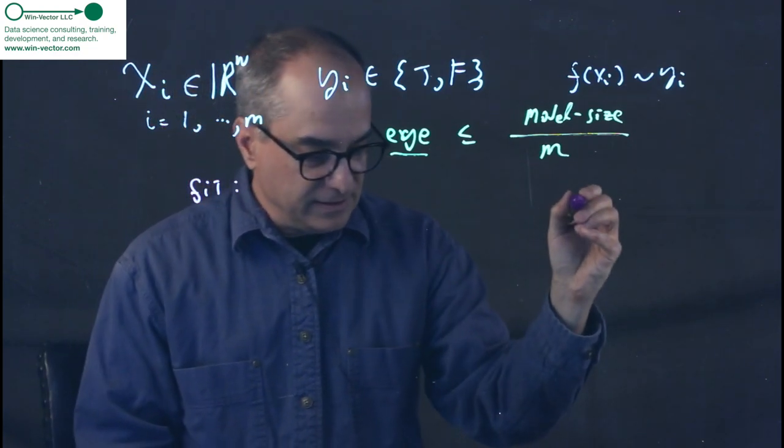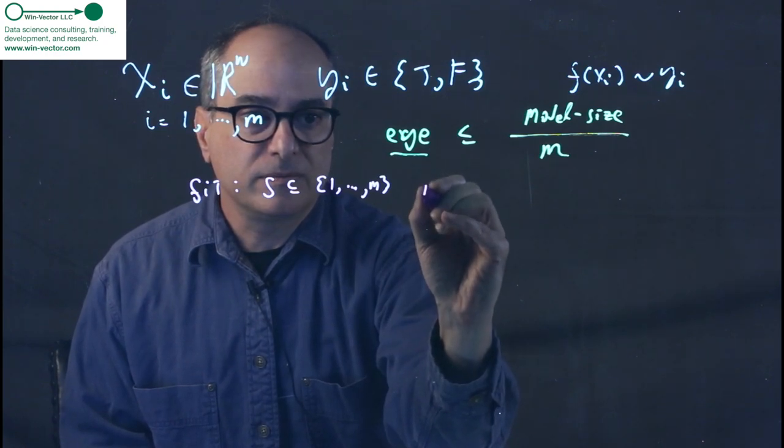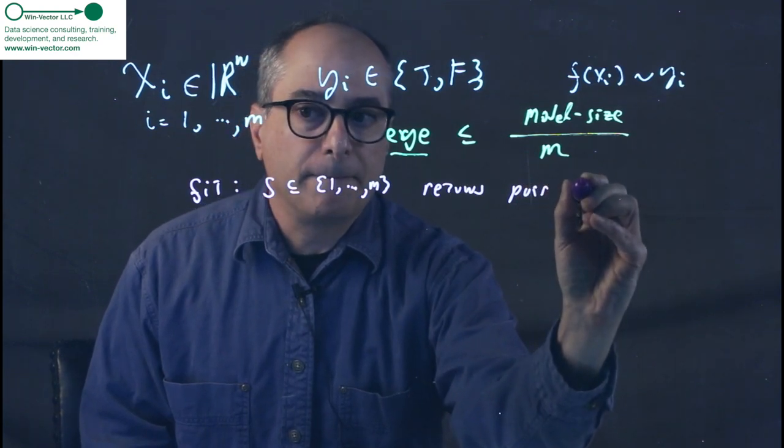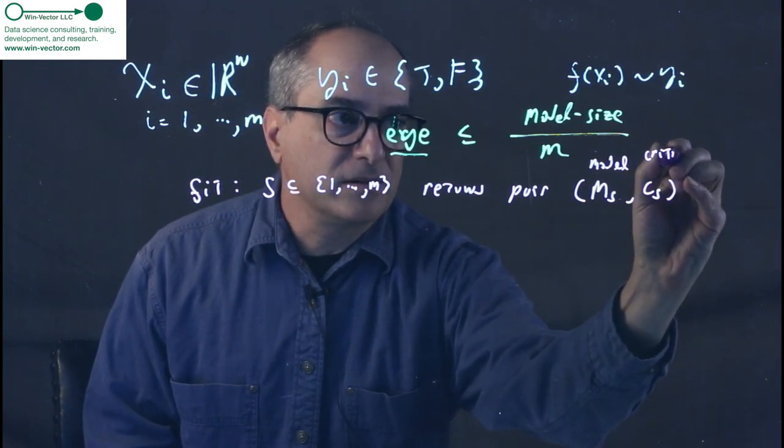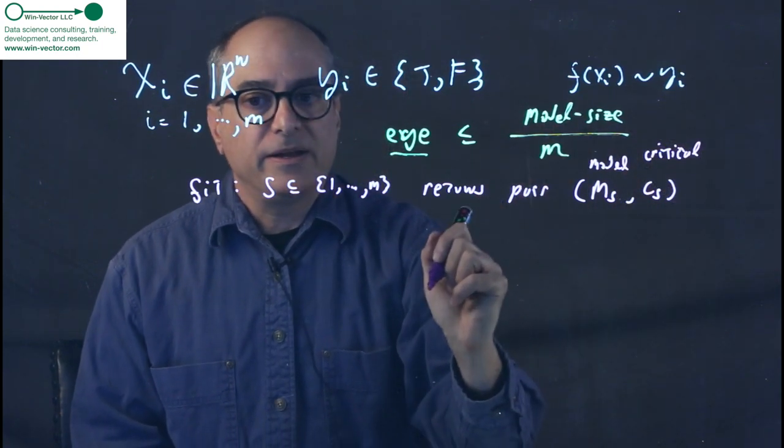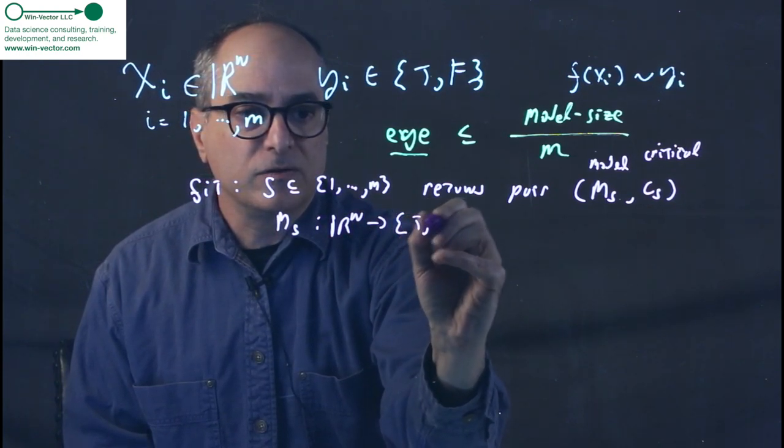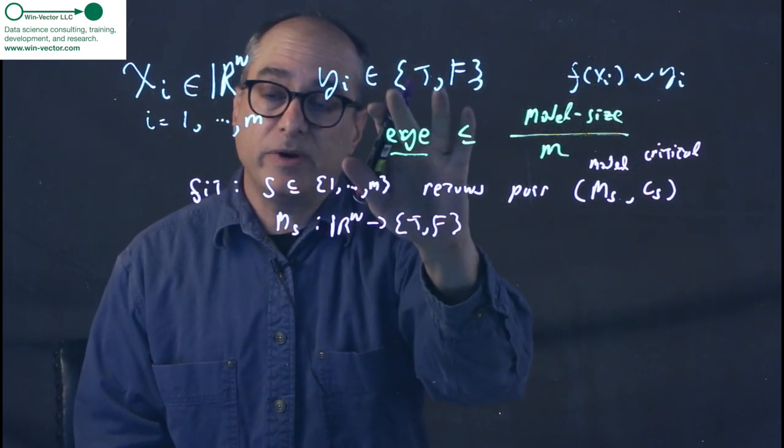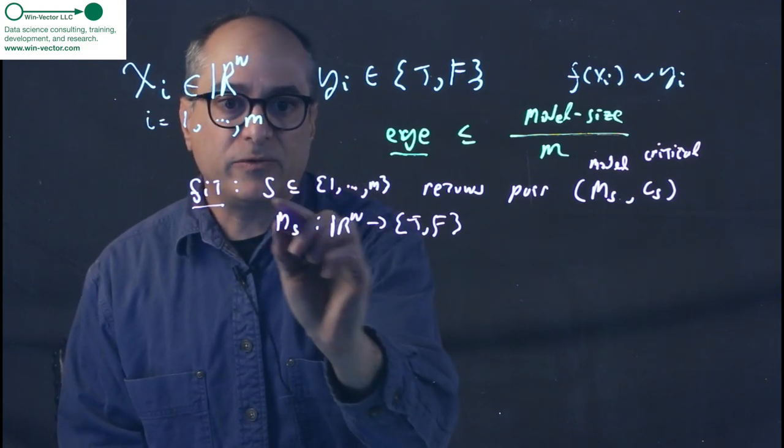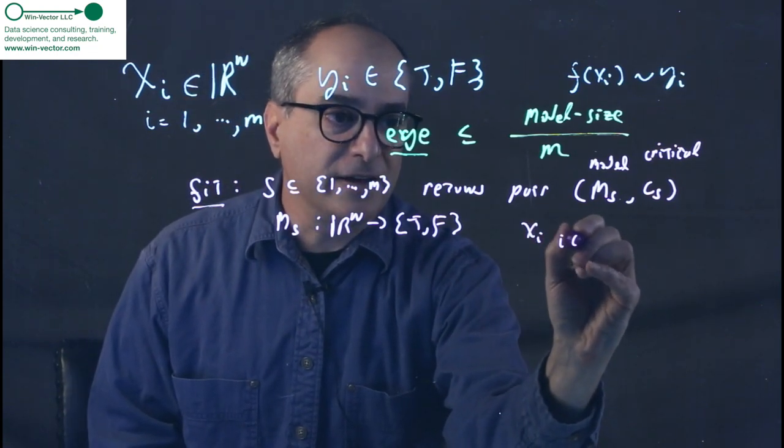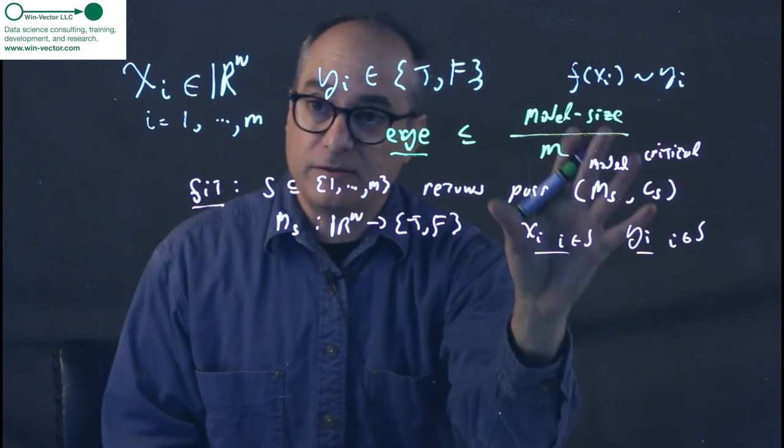So we have a procedure called fit. Now fit takes a subset of one dot dot dot m and it returns a pair: MS, which is a model, and CS, which is a critical set, a term I will introduce. Now the model MS is a map from R^n to true, false, so it is the function we hope can read off the y values. Now fit has access to the set of rows that are subscripted by the s, so it has knowledge of any xi for i in s and any yi for i in s, but it does not get to see any row that is not subscripted by s. So it only gets to see the subset of this training set.